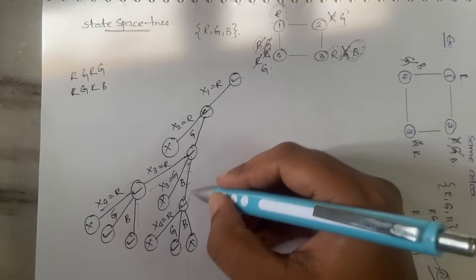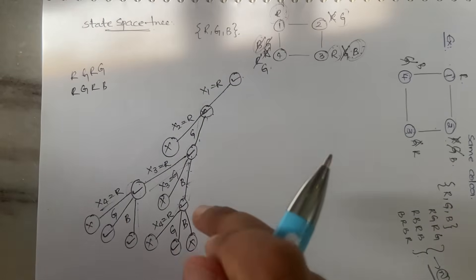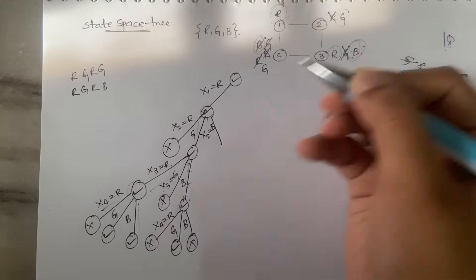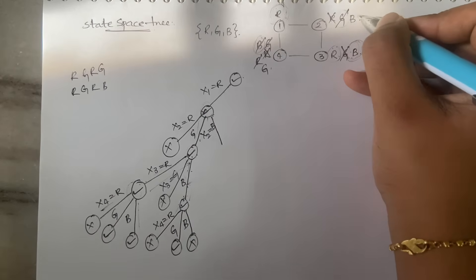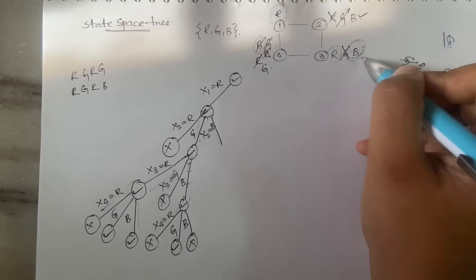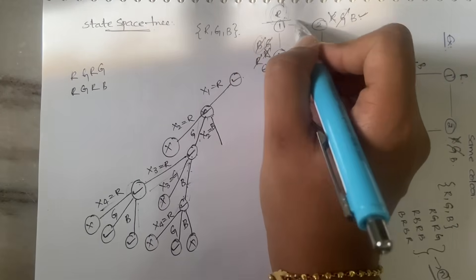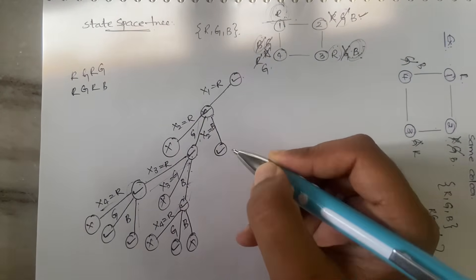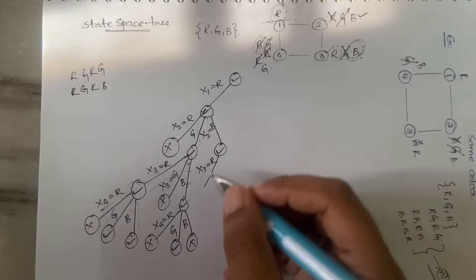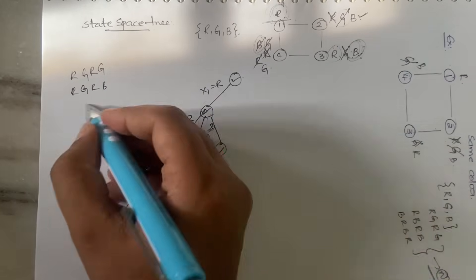Backtracking now moves up. x2 = blue — is it accepted? Yes, because x1 has red and is adjacent, but blue is not red, so x2 = blue is accepted. Now we need to check x3 = red under this branch. We also get an accepted condition here — the path so far is R-G-B-G, which is one more solution. x3 = red: can we take it?